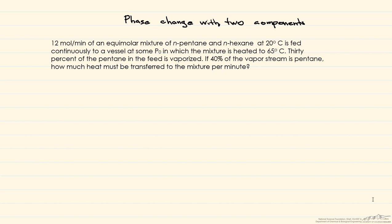So we have 12 moles per minute equimolar, so that means both n-pentane and n-hexane, six moles per minute. Temperature is 20 degrees C, fed continuously at some pressure P, which is not stated, and the mixture is heated to 65 degrees C.